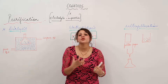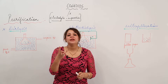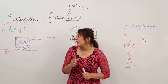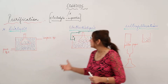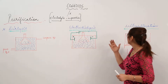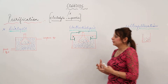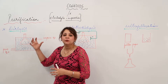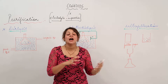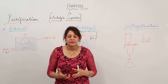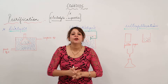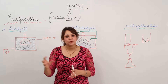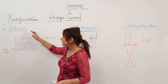We have three main processes used in the purification of colloids: dialysis, electro-dialysis, and ultra-filtration. We'll be taking them up one by one to understand what phenomena are involved and how we get to purify those substances. It is clear that we need to purify colloidal solution from the electrolytes and impurities which are present.